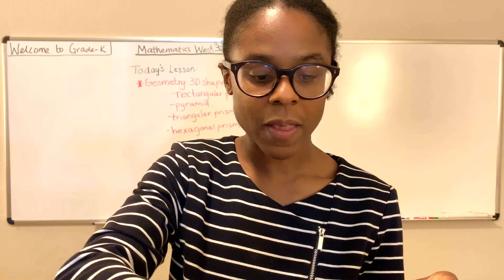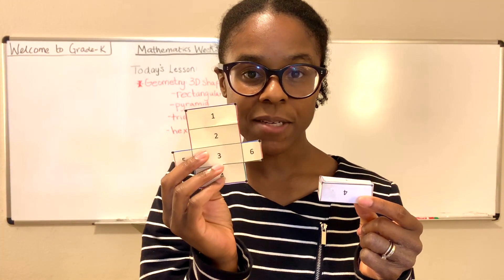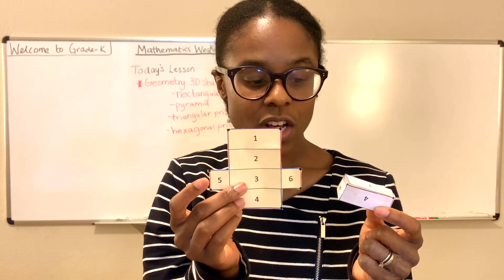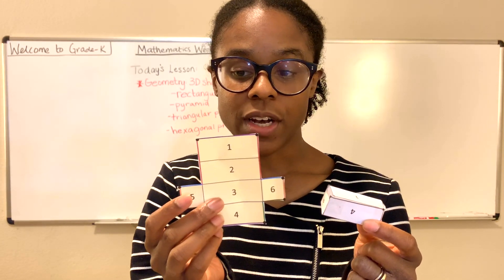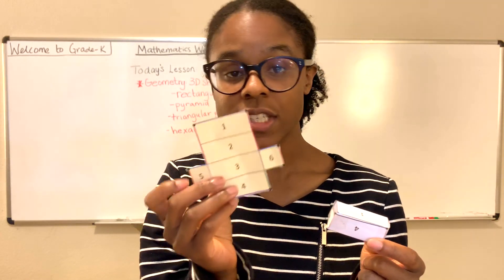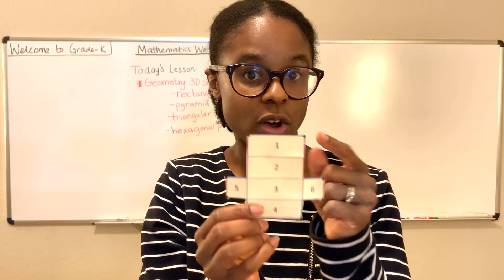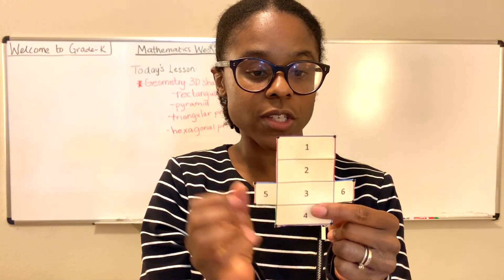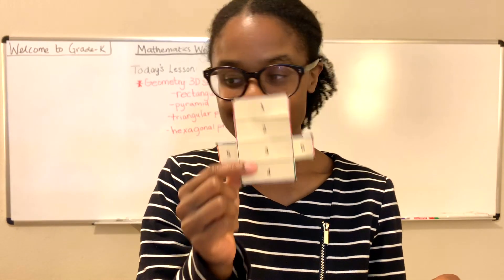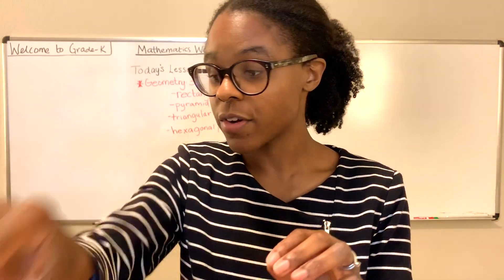We are doing a brief review of the four 3D geometrical shapes we've talked about in this unit. So far we've talked about the rectangular prism and compared it to the cube. The rectangular prism has 6 faces, 12 edges — you can count: one, two, three, four, five, six, seven, eight, nine, ten, eleven, twelve — and 8 corners, where the two edges meet: one, two, three, four, five, six, seven, eight.